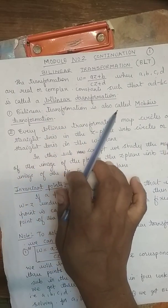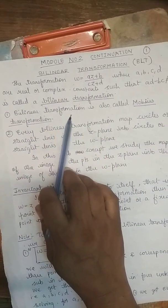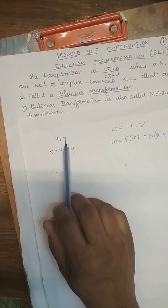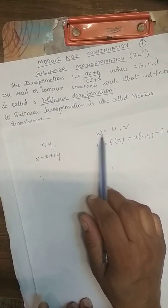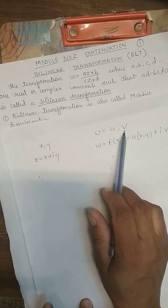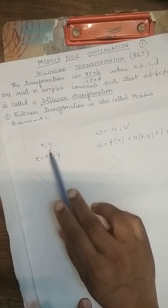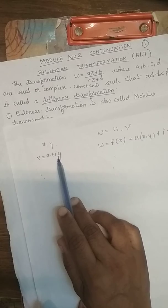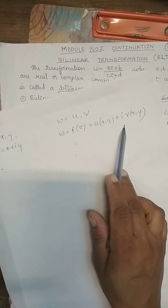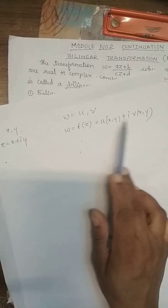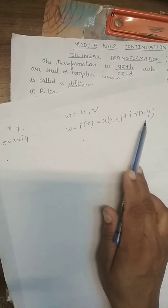Bilinear transformation is also called Möbius transformation. In this model, we know that in the Z plane, coordinates of points are represented as X comma Y. Similarly, in the W plane, coordinates are represented as U comma V. We know that Z equals X plus iY and W is a function of Z, represented as U(X,Y) plus iV(X,Y), where U and V are functions of X and Y.